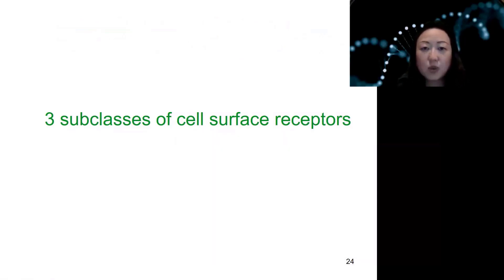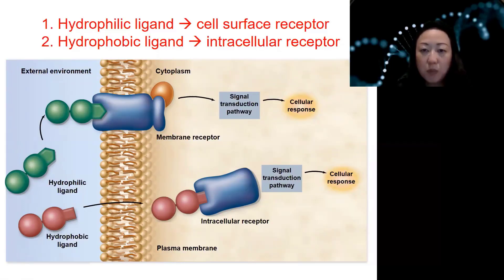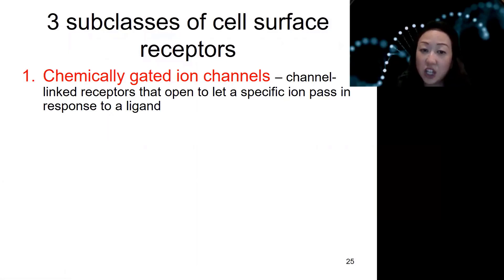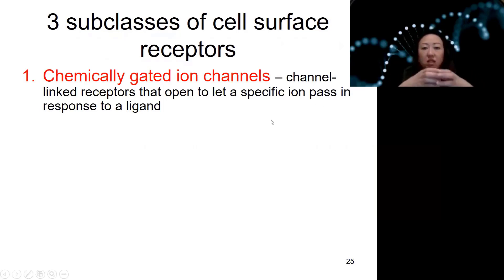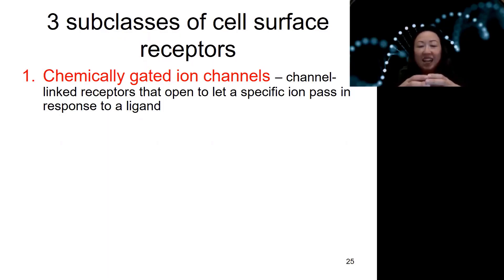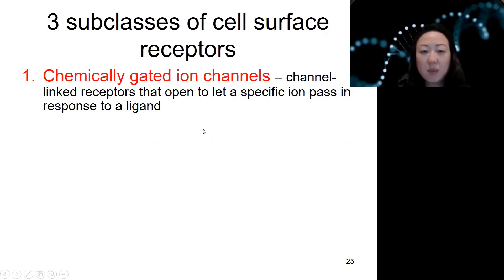There are also three subclasses of cell surface receptors. The first is chemically gated ion channels. These types of receptors are channels — we talked about this before in earlier chapters when we discussed how these proteins can open up in the middle and become like a barrel, allowing the middle to be hydrophilic. Although it's sitting on the membrane and is all hydrophobic around, these ion channels can open in the middle, and ions — which are hydrophilic and carry charge — can pass through because this protein is hydrophilic in the middle.